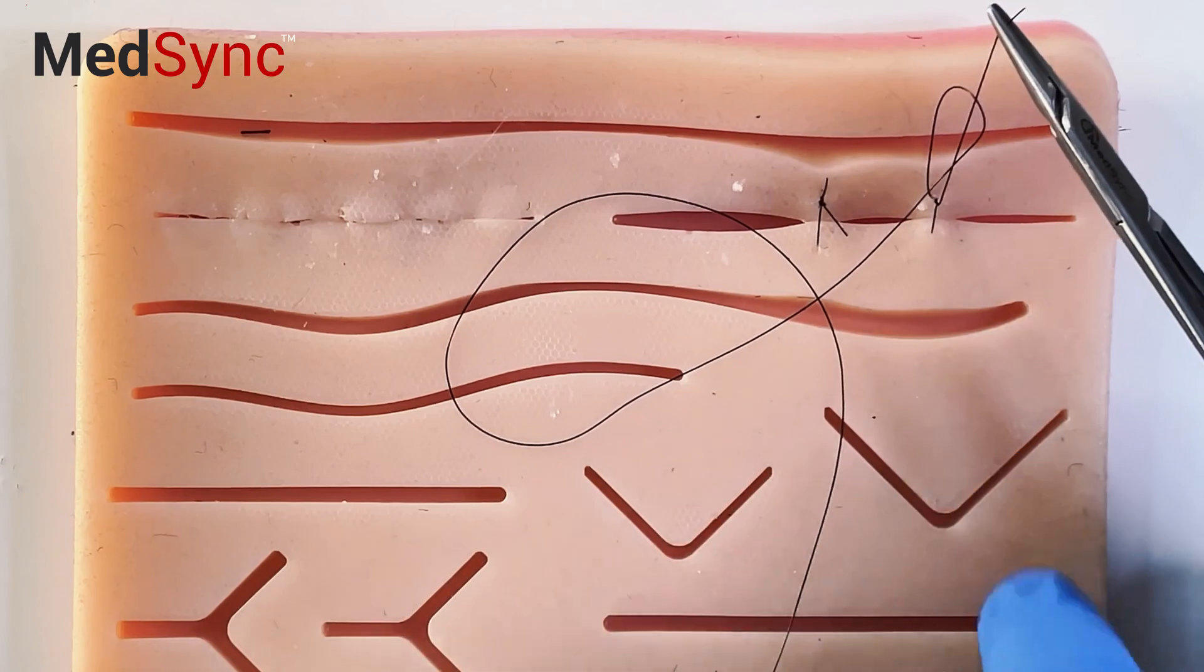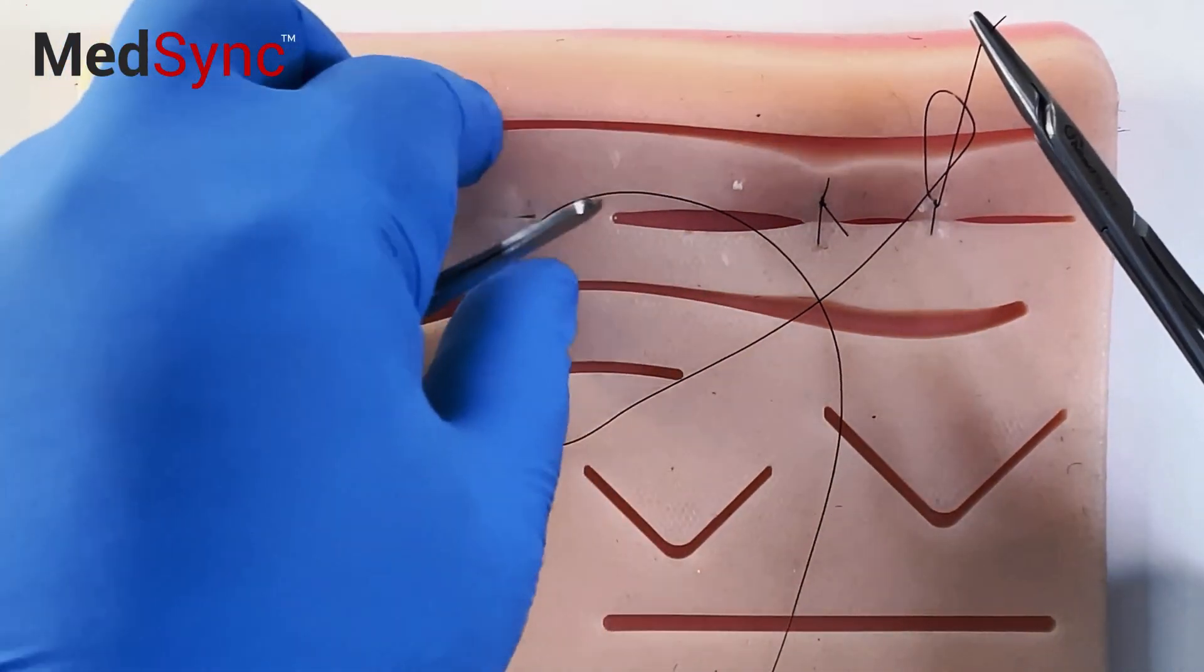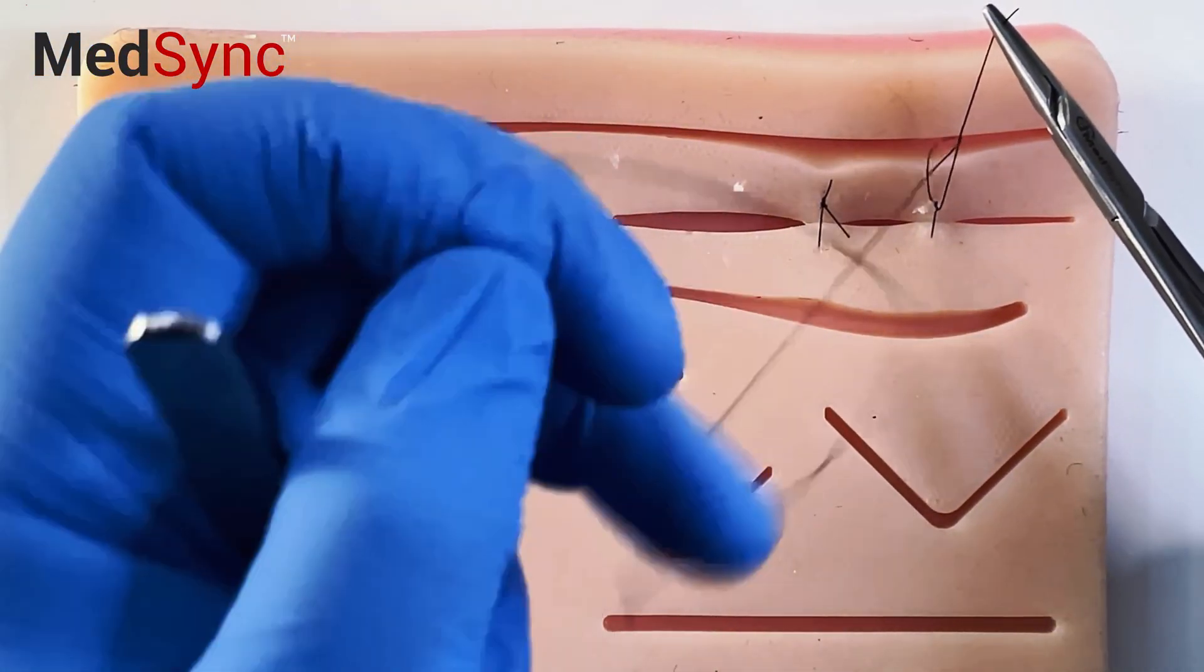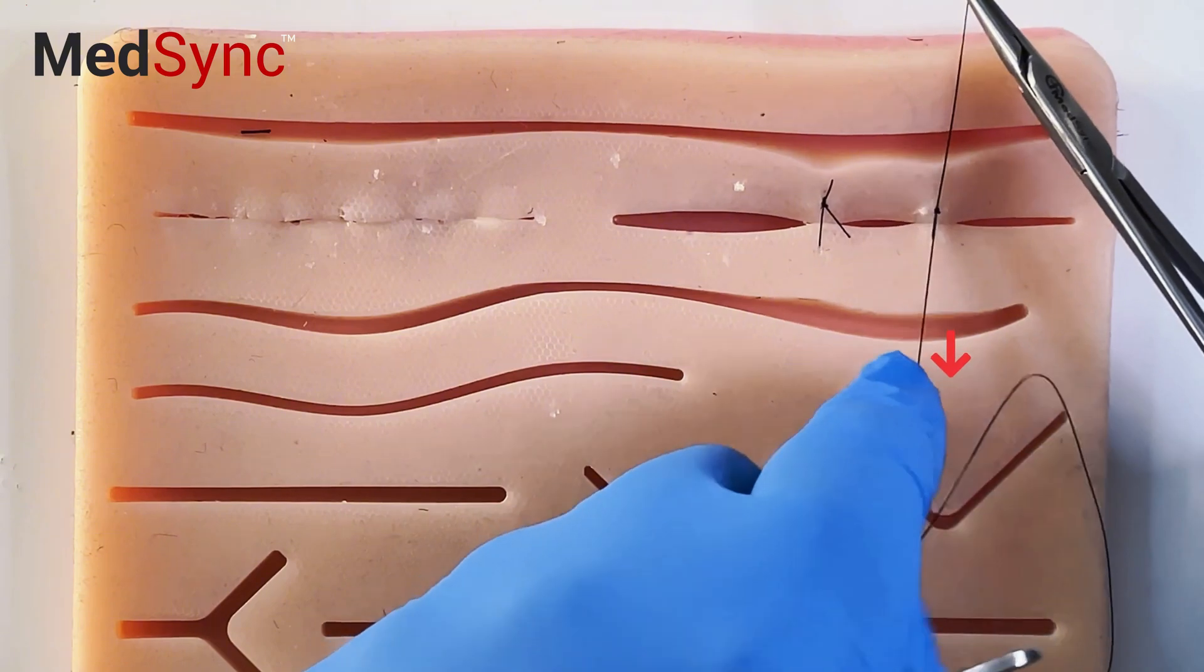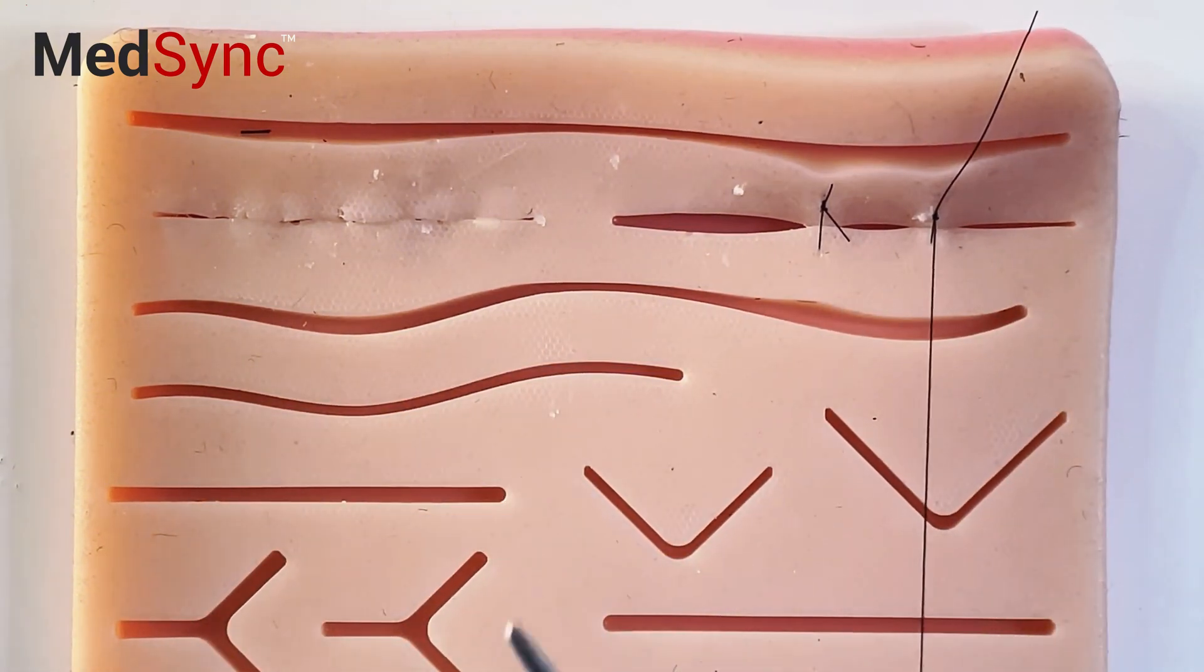And if you let go, the wound will still stay closed. Now pull the long suture and tighten your knot and finish with another reef knot.